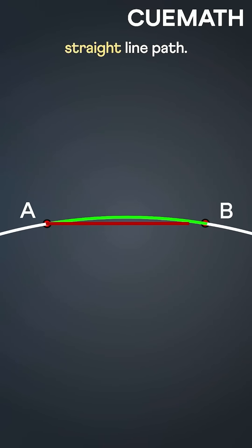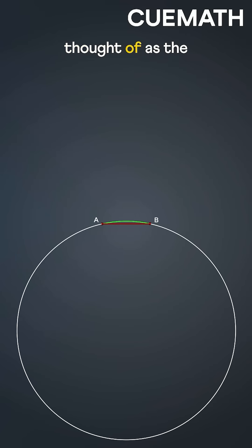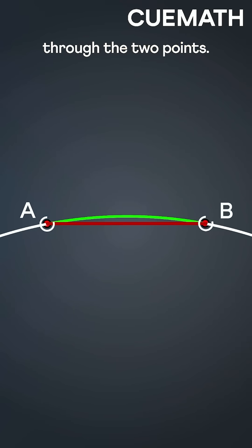It approaches the shortest straight line path. So, the shortest path can be thought of as the arc of the largest circle through the two points.